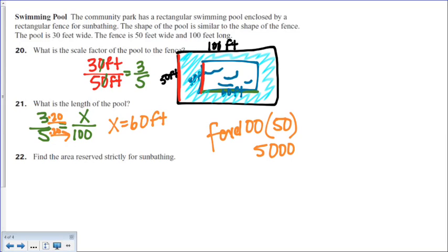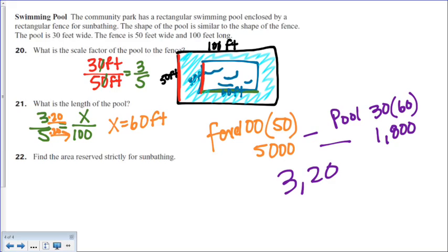And then you subtract the pool, right? Because if I have the pool, I can't sunbathe in there, supposedly. So if I have the pool, the area of the pool we just found is 30 by 60, which is going to give you 1,800. So we do 5,000 minus 1,800, and hopefully you get an answer of 3,200, right? So I have 3,200 feet to sunbathe, which means all the area outside the pool. And the only way we were able to find the area of the pool is if I used the scale factor to find the length. So that kind of gives you a kind of real-life application of finding and using scale factor to find missing sides.